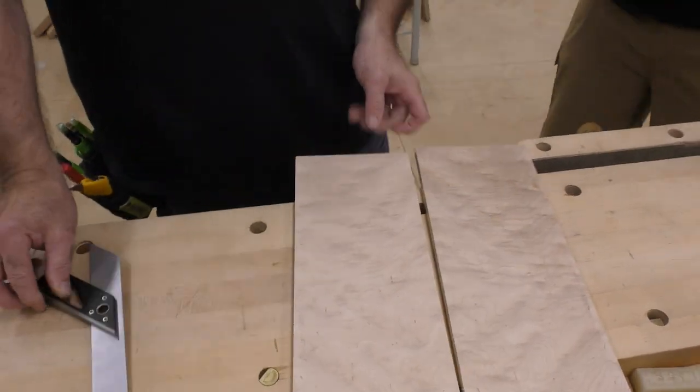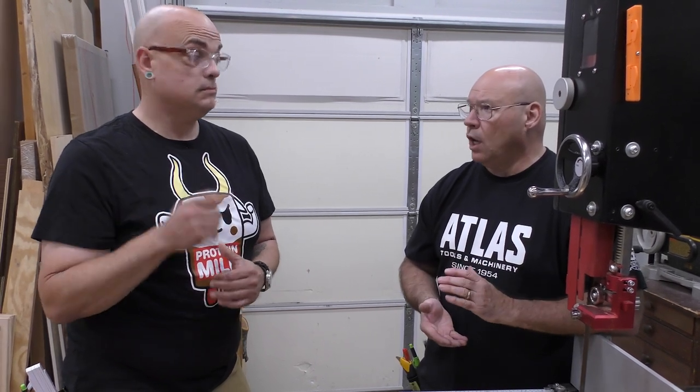So you can always tweak the tension on the bandsaw. All right, so there are some simple ways of tensioning the blade. The end result is to double check when you're resawing tall stock to make sure it is tracking right. And that's how you tension the blade. And those are basically the three ways.